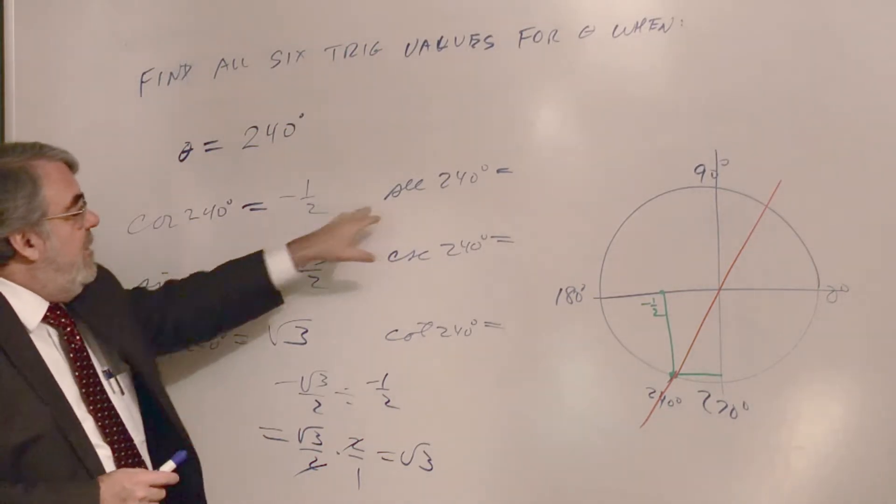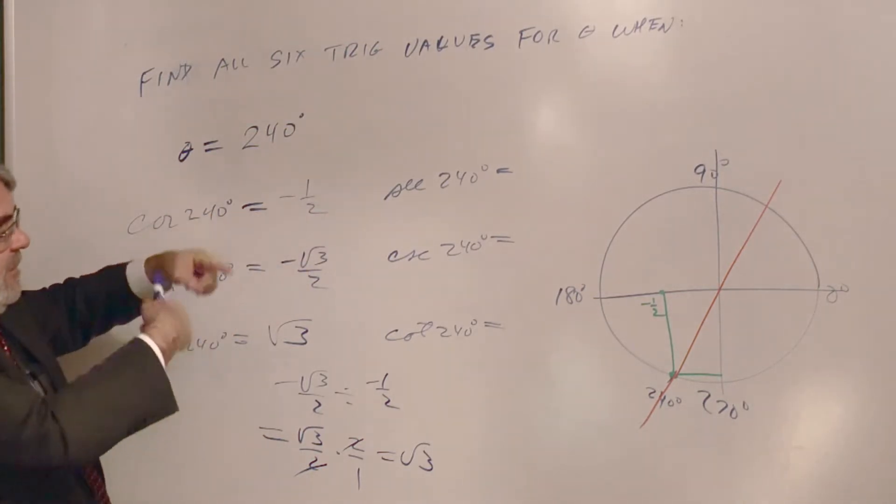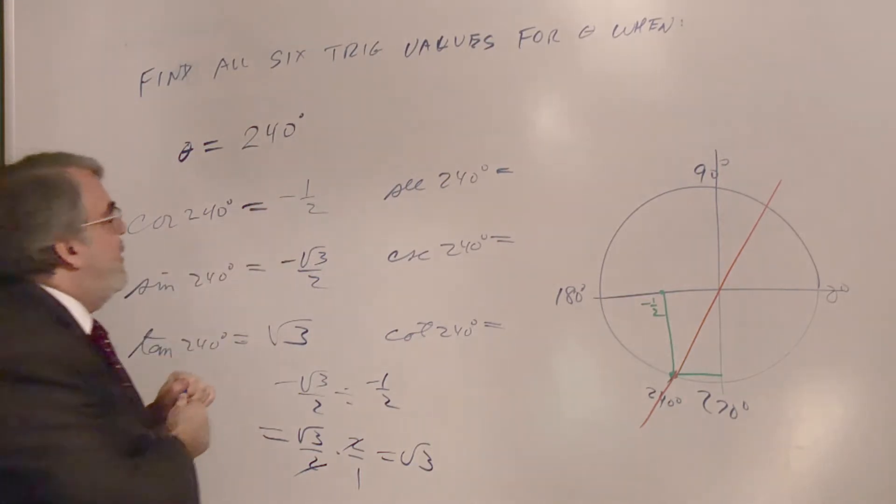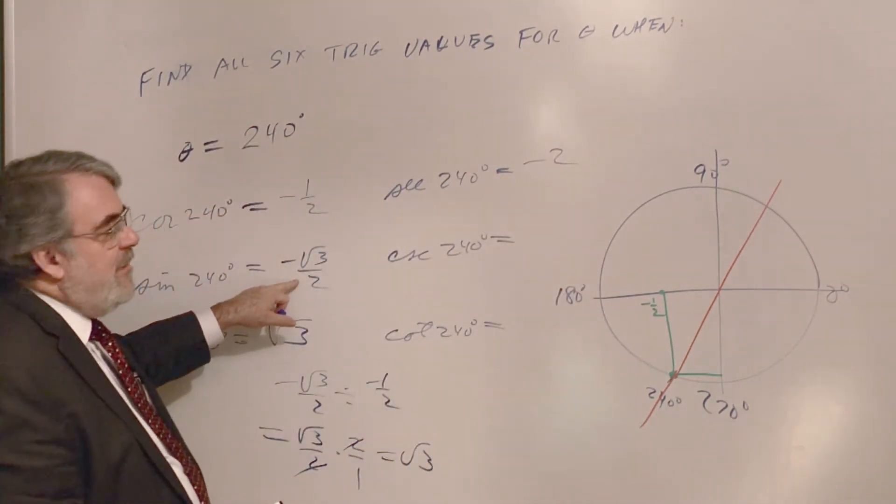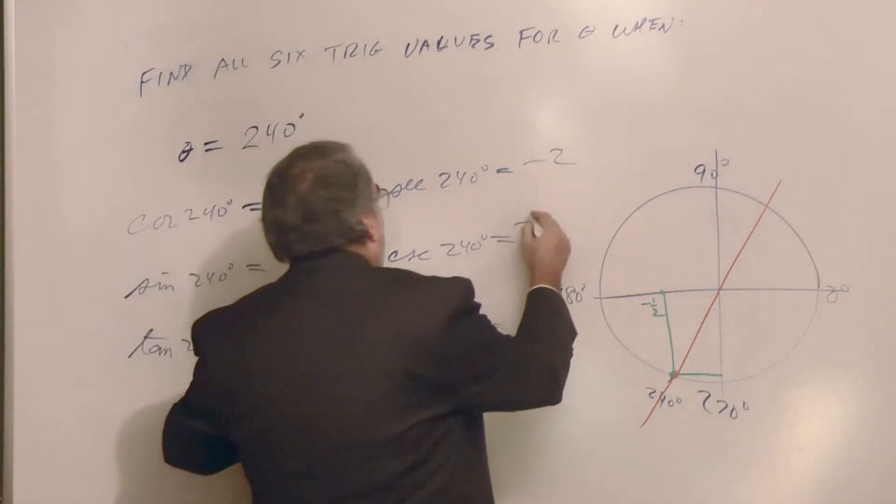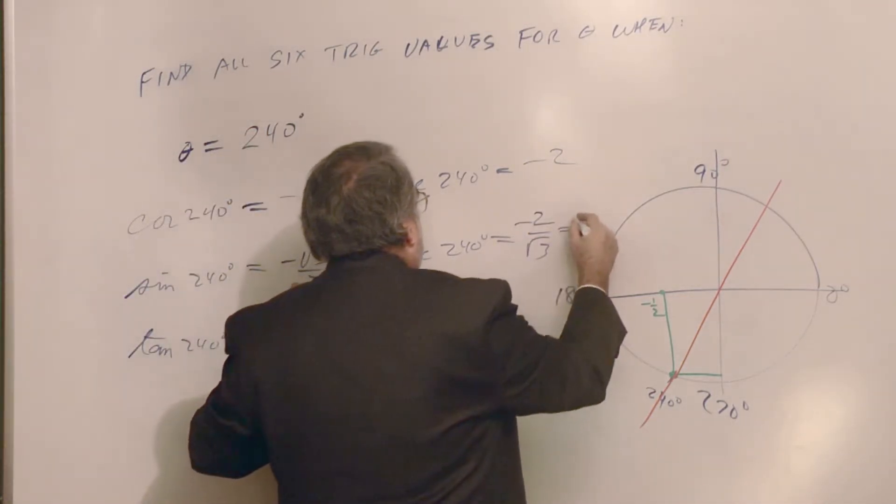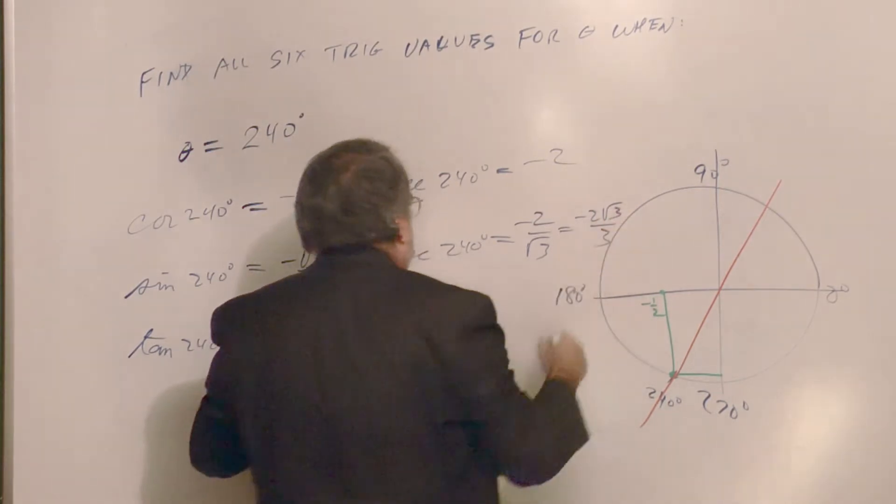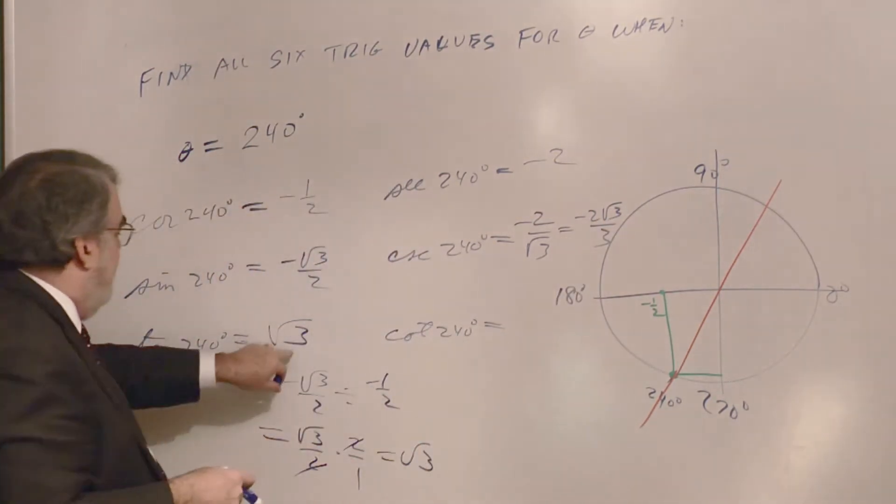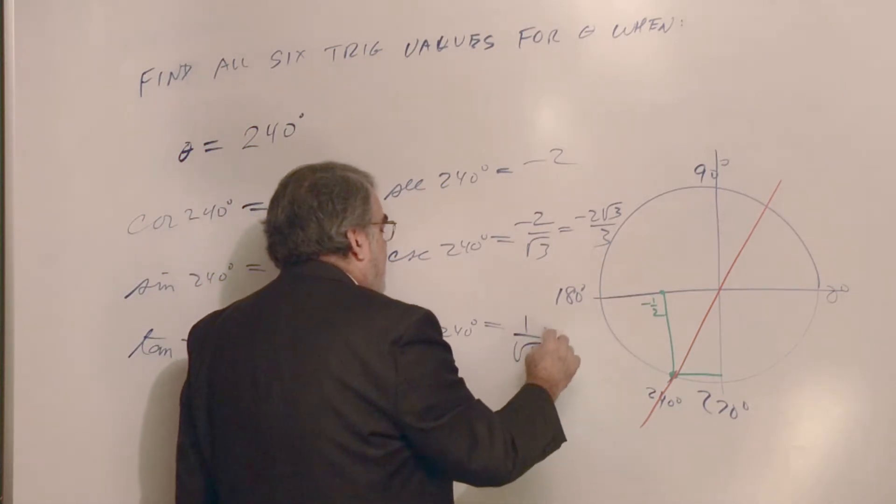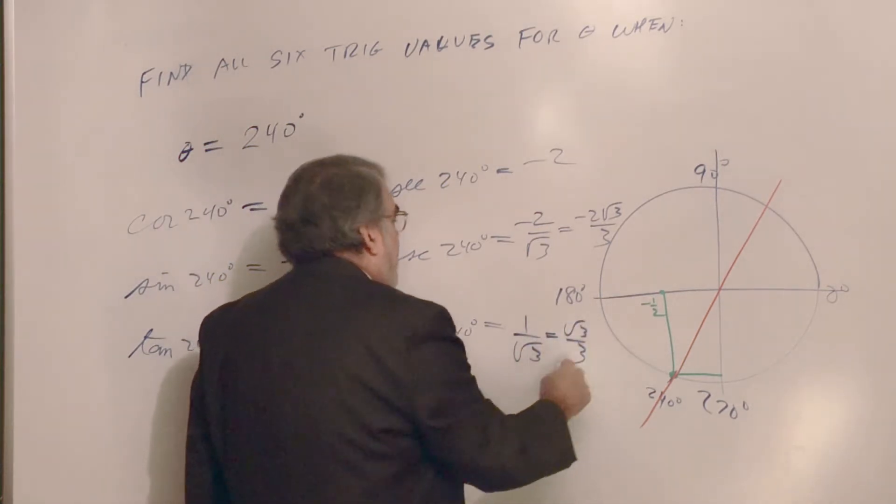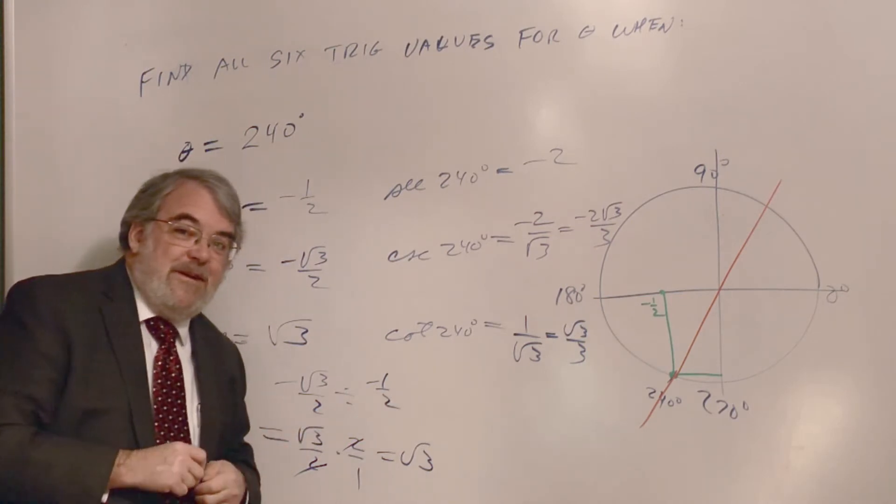Alright, well, we'll finish it out. There's cosine, secant is the reciprocal. So it's going to be minus 2. This will be minus 2 over the square root of 3, which is negative 2 square root of 3 over 3. We've gone through that before. Cotangent would be 1 over the square root of 3 over 3. There you are. So we have all those down.